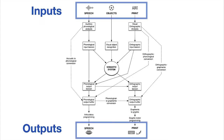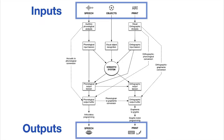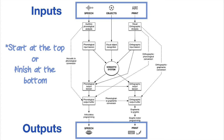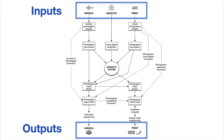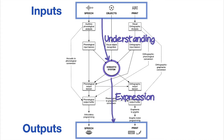Around the edges of this model there are inputs and outputs. If you want to produce language or comprehend language you're going to have to start at the top or bottom of this model. Right in the middle is a semantic system — essentially that's where the meaning of language is stored and where it interfaces with our knowledge and memory of the world. To understand something it needs to start with the inputs and end in the semantic system. To communicate something we start in the semantic system and finish in one of the outputs.